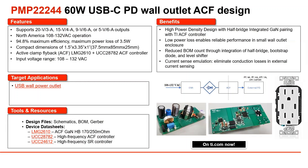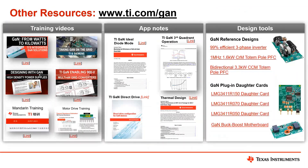Hopefully this gives you a strong idea of why ACF is a great option for your system, why you'd want to use it in a charger, and that TI is helping provide a streamlined two-chip solution for your primary side regulation in 60 to 65 watt adapters. You can go to TI.com/GAN to learn a lot more. We have a huge set of training videos for everything from low power to high power solutions, a number of app notes talking about different feature sets and thermal design, and a ton of different design tools — from multi-kilowatt reference designs to these lower power reference designs.